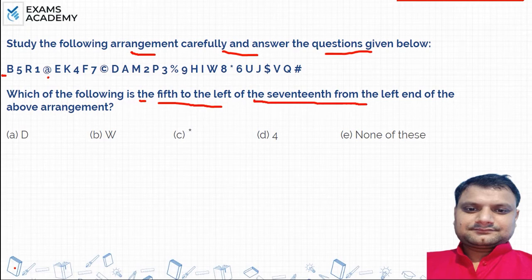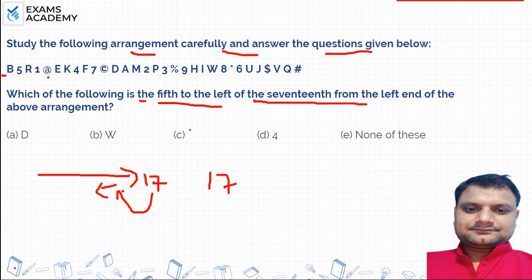Look, 17th from the left side, and 5th to the left of it. So 5th to the left means here. So 17th total, if it's 5th from the left will be done.